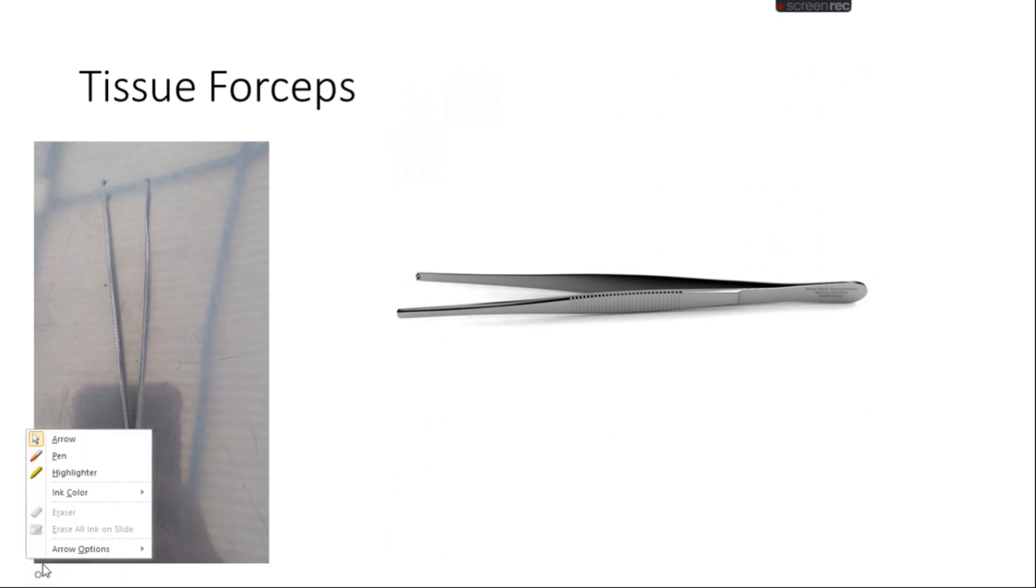If we talk about tissue forceps, they have multiple uses. One use is to collect different types of materials from different places. On the other hand, they are used to capture the skin while performing surgery on animals.